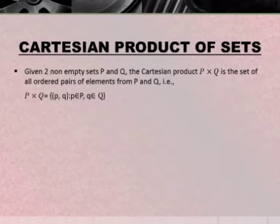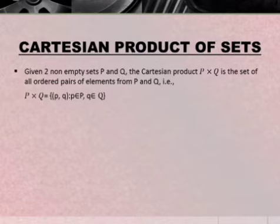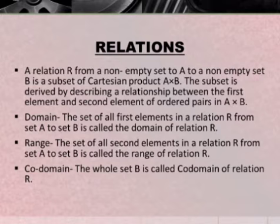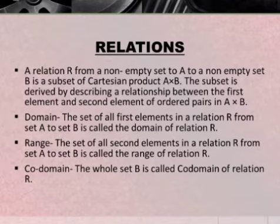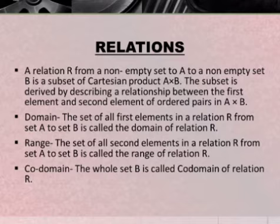What is a Cartesian product of sets? Given two non-empty sets P and Q, the Cartesian product P into Q is the set of all ordered pairs of elements from P and Q. What is a relation? A relation R from a non-empty set A to a non-empty set B is a subset of Cartesian product A into B. The subset is derived by describing a relationship between the first element and second element of ordered pairs in A into B.